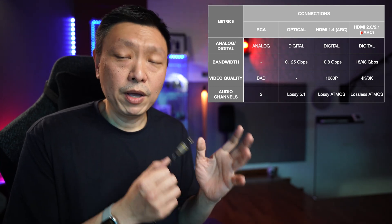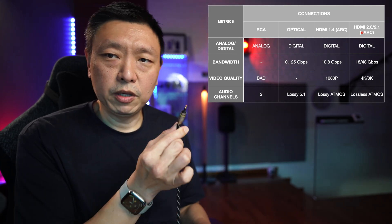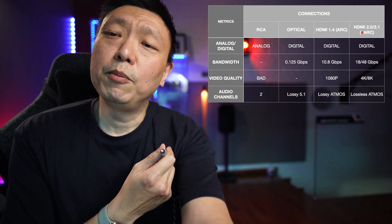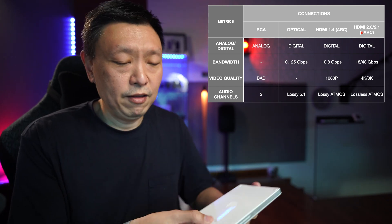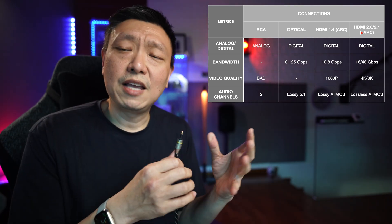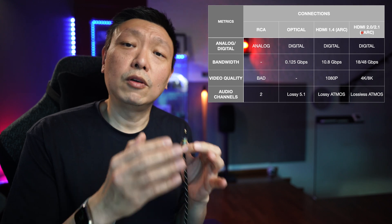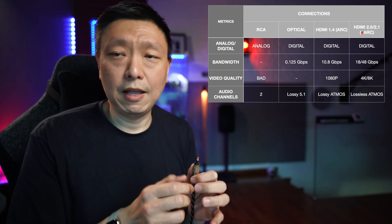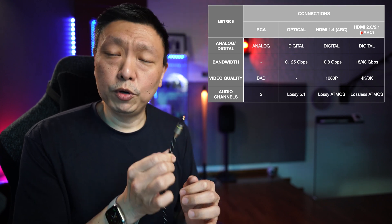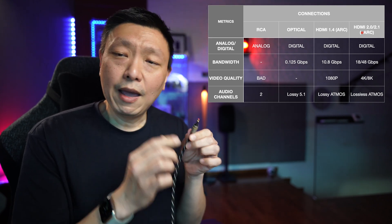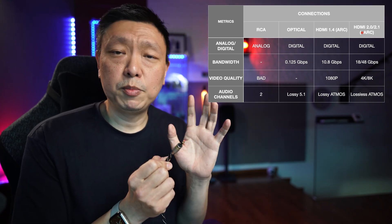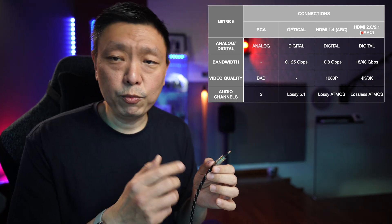Moving on to the next format, which is digital, is this optical cable. If you look at this optical cable, it is actually transmitting some form of light — it uses light to transmit. It is capable of transmitting two channels of uncompressed audio in stereo format. If you move to surround sound, it is capable of producing 5.1 channel but in a compressed format. The optical cable is not capable of transmitting video — it just doesn't have enough bandwidth to do so.